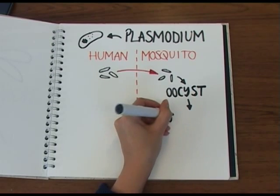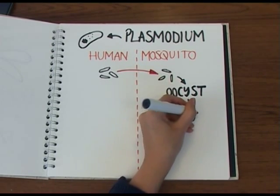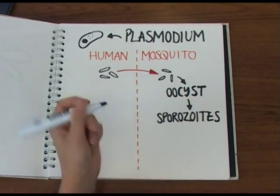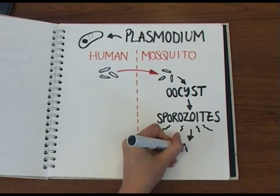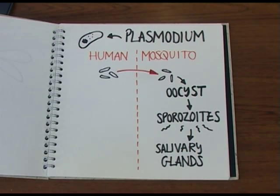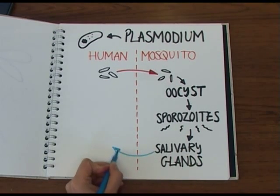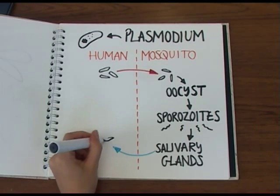After a short while, this oocyst hatches, releasing structures called sporozoites, which look a bit like tiny worms. These then burrow into the salivary glands of the mosquito, and are then injected into the next person that the mosquito feeds from, spreading the infection.